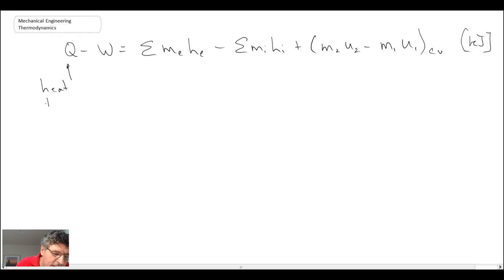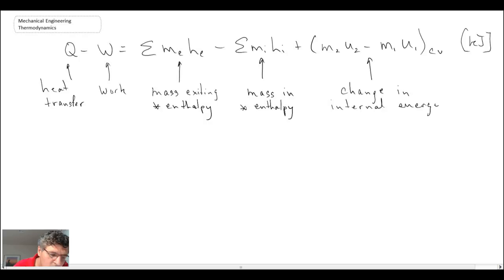On the left we have heat transfer. Next is work. Then we have the mass that is exiting, and it is multiplied by the enthalpy of the exiting fluid. Next we have mass in times the enthalpy. And finally, the last term here is the change in internal energy of your control volume.